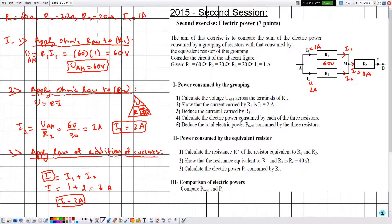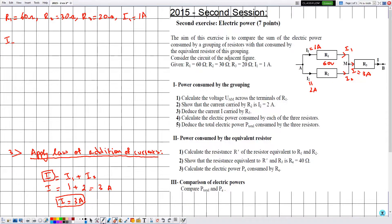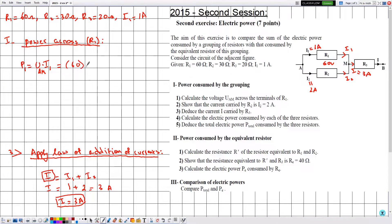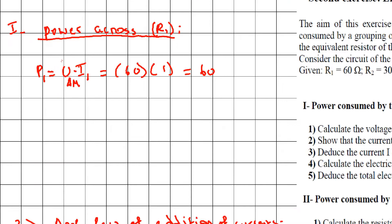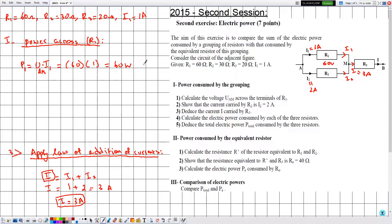In number four, calculate the electric power consumed by each of the three resistors. Starting with resistor R1 — the formula for power is P = U × I. The power across R1 is P1, with applied voltage UAM = 60 volts traversed by current I1 = 1 ampere. This gives 60. Since U and I are in SI units, P is in watts. Therefore P1 is equal to 60 watts.